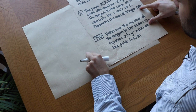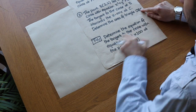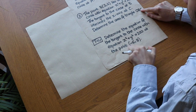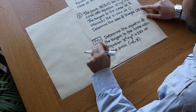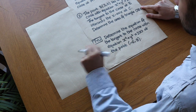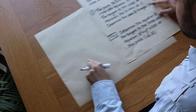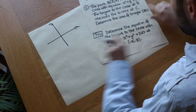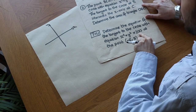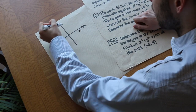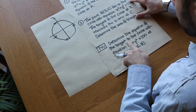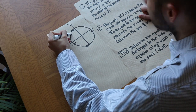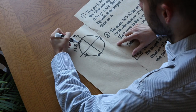Now for a test-your-understanding question: determine the equation of the tangent to the circle with equation x² + y² = 100 at the point (−6, 8). You may want to pause the video to try this yourself. The square root of 100 is 10, so the radius is 10 and the circle passes through the 10s. The point (−6, 8) lies on this circle, and we draw the tangent at that point.